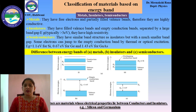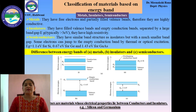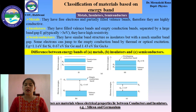Due to this smaller band gap, some electrons jump from the valence band to the empty conduction band by thermal or optical excitation. The examples of semiconductors are silicon, germanium, gallium arsenide, and many more. They can be of elemental type or can be in compound form.